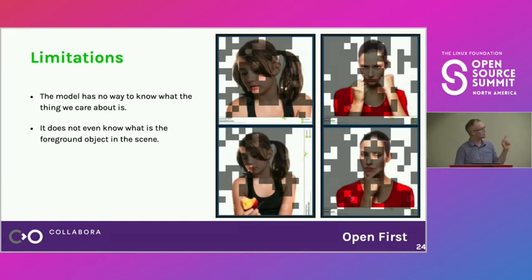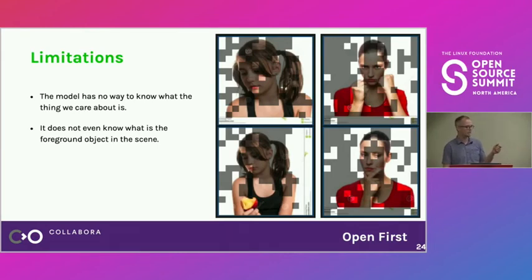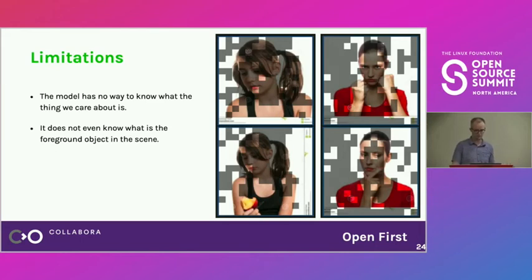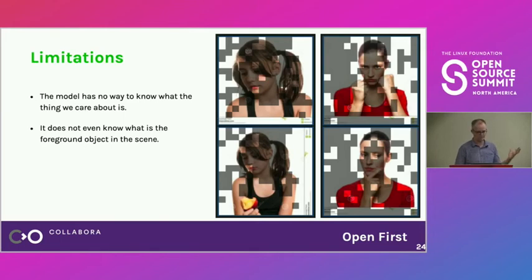The gray boxes in the example represent matched patches between two images. As you can see, a lot of the similarity for the model is actually driven by background, not foreground. I don't have an automatic fix for this, but it still works pretty well. You just have to be aware that sometimes matches may be driven by background similarity.